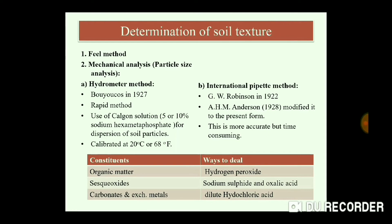The Hydrometer method was given by Bouyoucos in the year 1927. It is a relatively rapid method compared to the International Pipette method. The dispersing solution used is called Calgon solution, which is 5 or 10% sodium hexametaphosphate. The hydrometer is calibrated at 20°C (68°F). If the temperature is not 20°C, you must apply a correction factor.